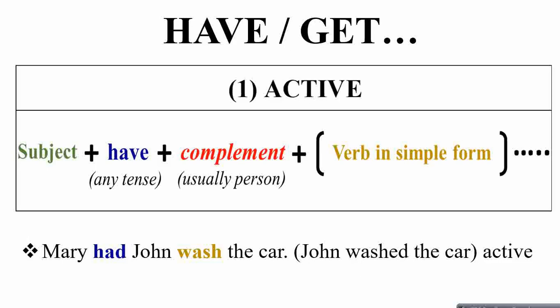First, for 'have' in the active form, the sentence structure will be: subject + have (in any tense — past 'had', or continuous 'having') + complement (usually a person) + verb in the simple form. So if you have an active clause with 'have', the following verb will be in the simple form.